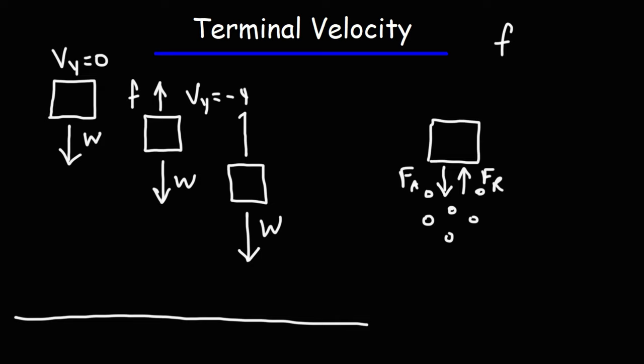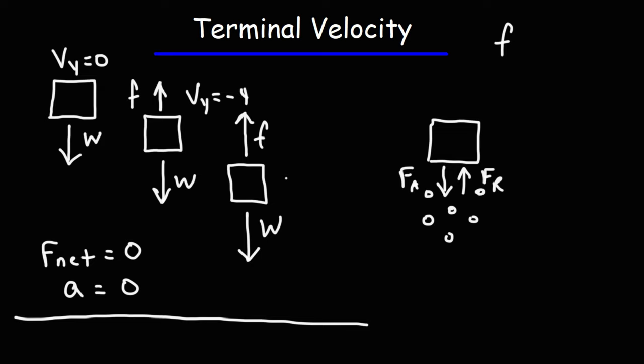It's going to keep increasing until it equals out the weight force. Once the weight force and the air resistance are equal, the net force is going to be equal to zero. And according to Newton's second law, the net force equals ma. So if the net force is zero, the acceleration is zero. And when the acceleration is zero, Vy is no longer increasing — the velocity is constant. So Vy has reached its maximum value.